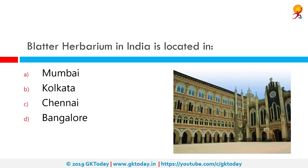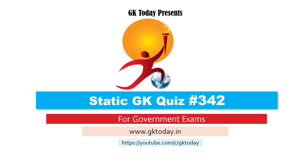The Blatter Herbarium — where is it located? It is located in Mumbai, India. The Blatter Herbarium is an internationally recognized herbarium for taxonomic studies and allied branches in botany. It was established in 1906 in Saint Saviour's College of Bombay. That's all for today's quiz — until the next video, goodbye.